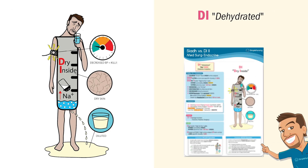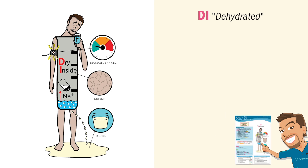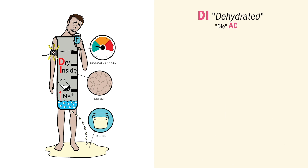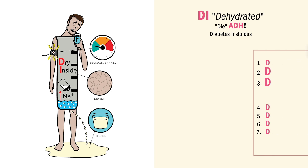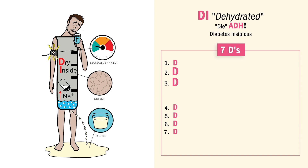Now switching gears, let's jump over to DI — diabetes insipidus. The memory trick for DI is 'die ADH, die!' ADH is dead, so we can't add to H2O. The body ends up urinating all over the place, peeing like a big circus elephant. The patient in DI will just look very dehydrated — literally the exact opposite of that swollen SIADH. Remember the seven D's of DI. DI means diuresing or draining fluid with high, high urine output — up to like 20 liters at a time.